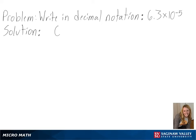Our problem is to write in decimal notation. Since our number is being multiplied by 10 to the negative fifth power, we know our exponent is negative, so we will be moving the decimal to the left.